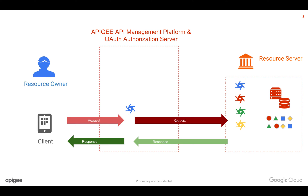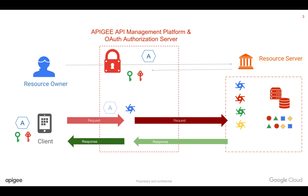Apigee can act like an OAuth 2.0 authorization server. It can mint keys as well as tokens, and is able to verify the tokens before sending the request to the backend server. Let's see what are the advantages of using Apigee Edge as an OAuth 2.0 authorization server.